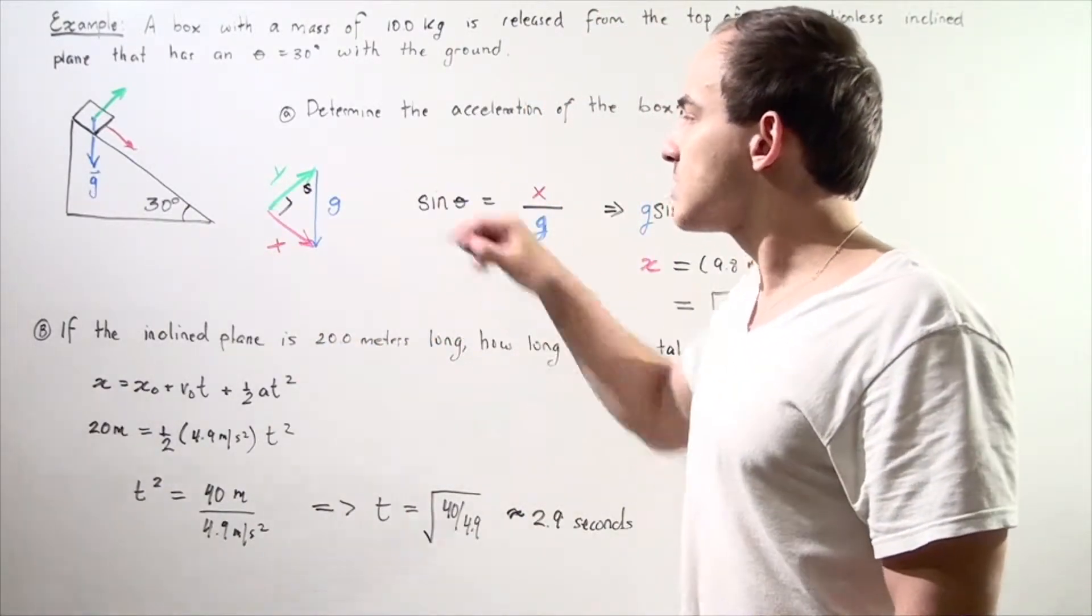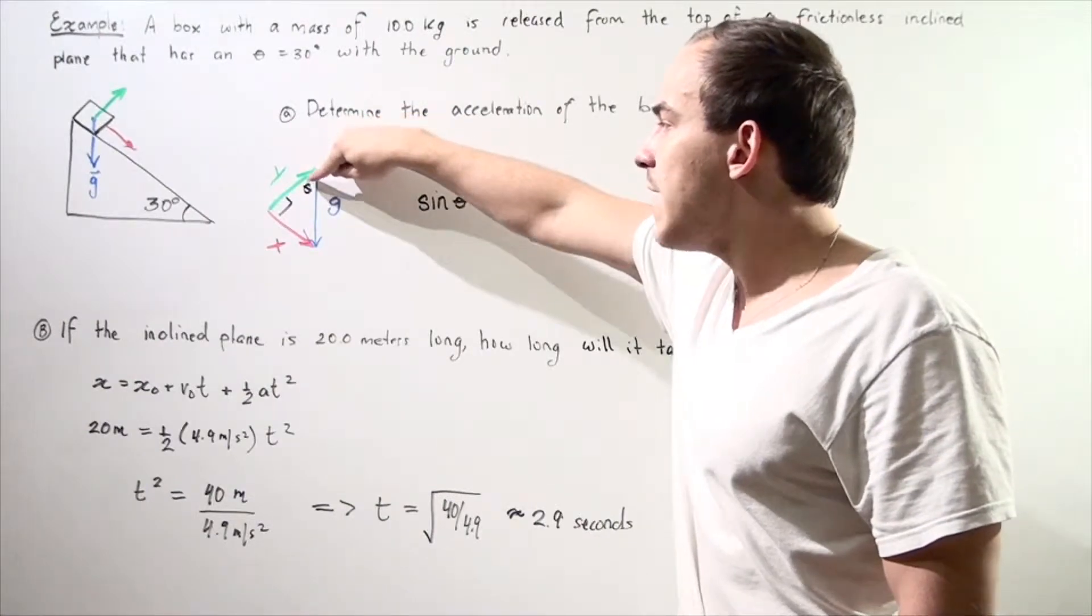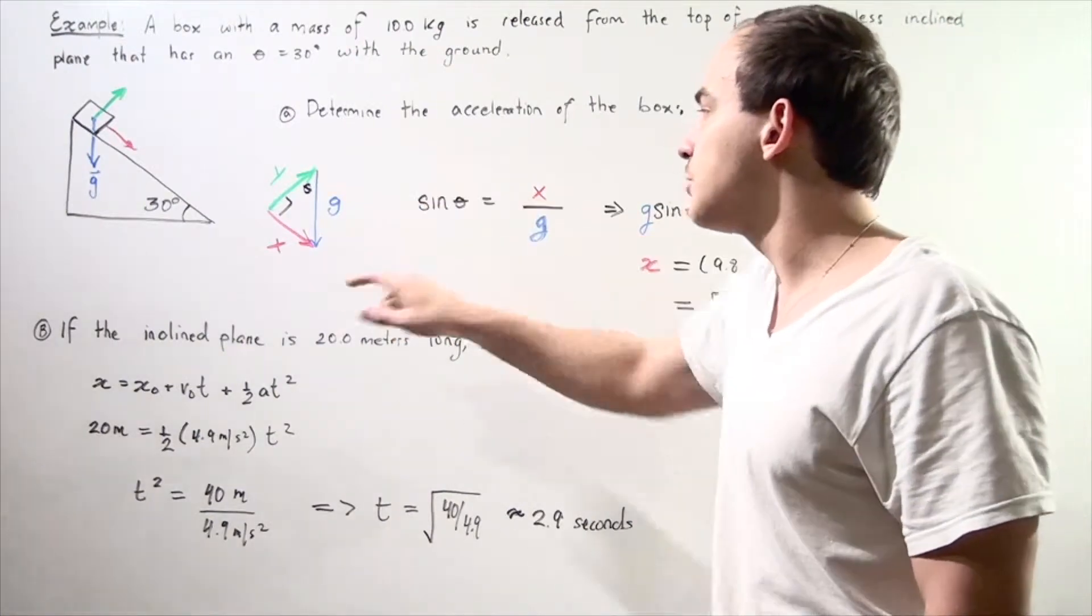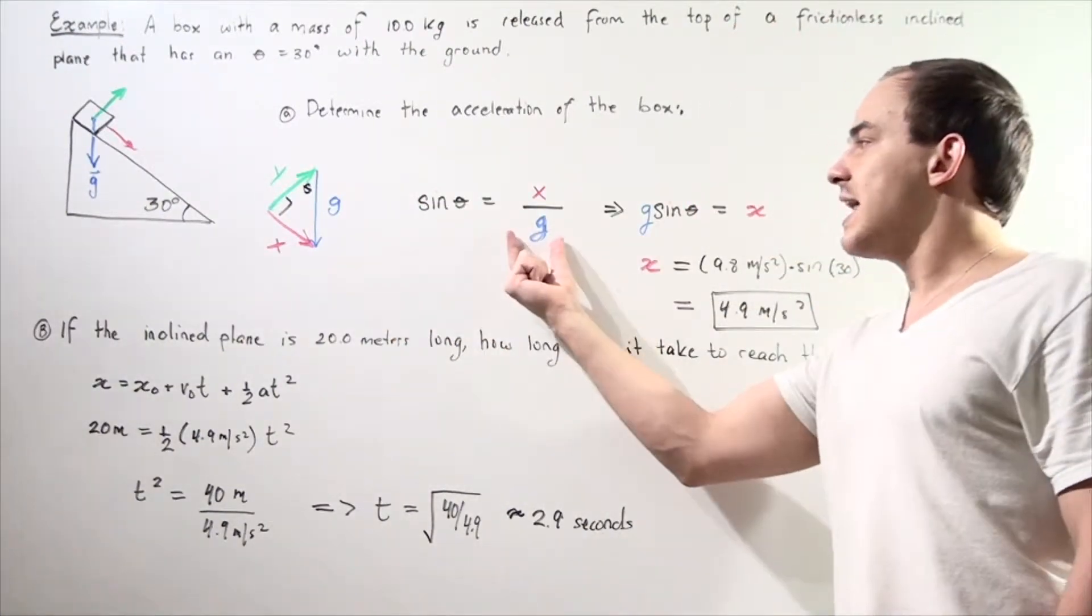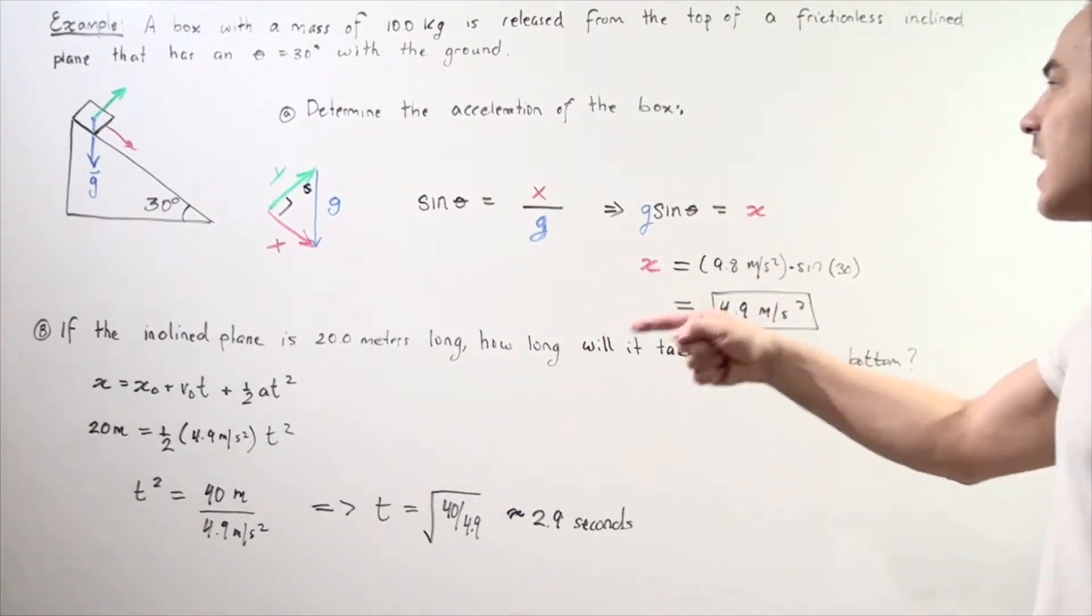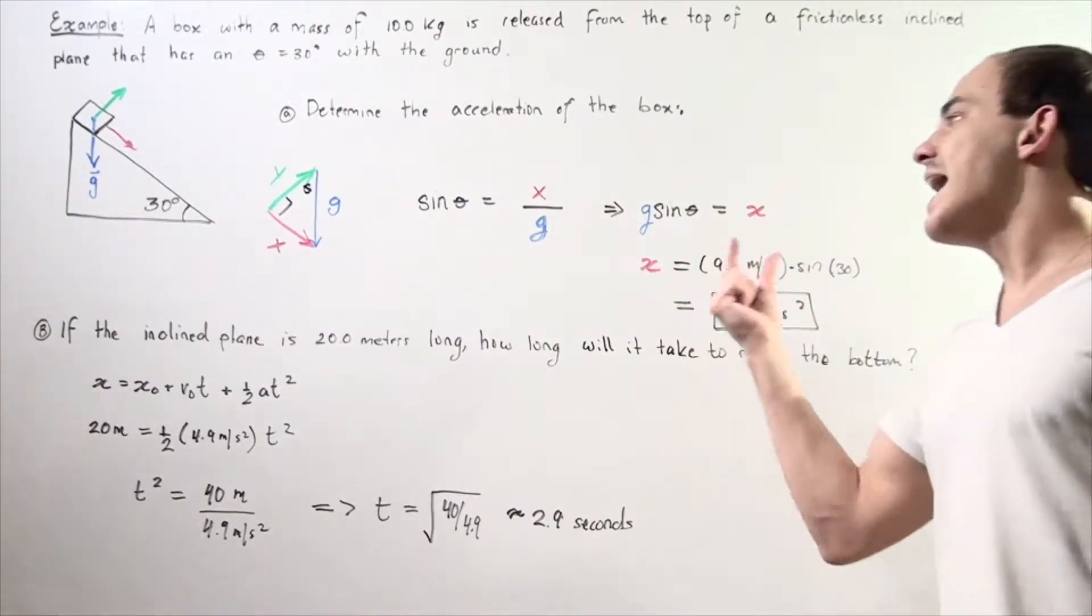So we use the sine trigonometric function to solve for our x. We're looking for x. So sine of the angle theta is equal to opposite x divided by our g, our hypotenuse. So we basically take the g and bring it over to the left side. We get g times sine theta equals x.